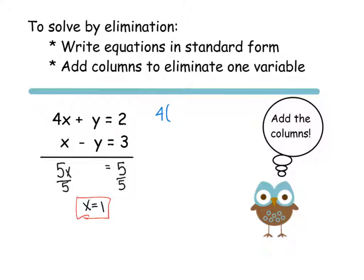So we have 4 times, instead of x, I know that x is 1. So 4 times 1 plus y equals 2. So I'm going to go ahead and simplify and solve for y. So I have 4 plus y equals 2. I need to subtract 4 from both sides. So I have y is equal to a negative 2.